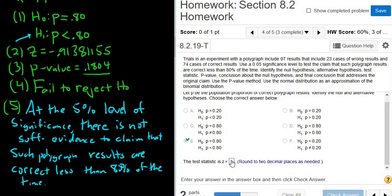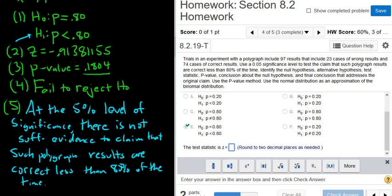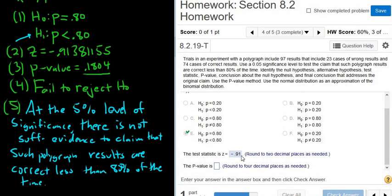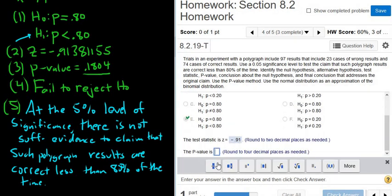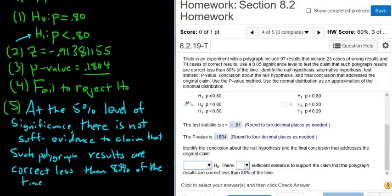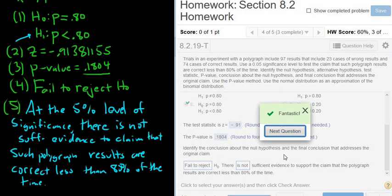It wants two decimals for the test statistics, so it looks like negative .91. Well done. The p-value wants four decimals. Sometimes it wants three. It's kind of weird. I prefer four. I think four is better, so I'm glad it's asking for four. And we failed to reject H0, so there was not enough evidence to support the claim that the polygraph results are correct less than 80 percent of the time. That's it. I hope that made sense.